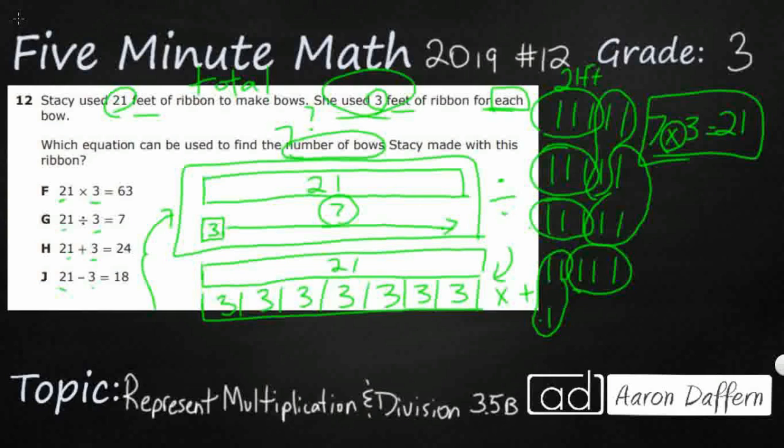So what we could do here is we can say, well, we've got 21 divided into sets of 3. And now that we know we are going to make 7 sets of 3, that's going to give us our answer here as G. We're not going to multiply because we're not going to make 63. And addition and subtraction don't work because this 'each' lets us know it's going to be multiplication or division.